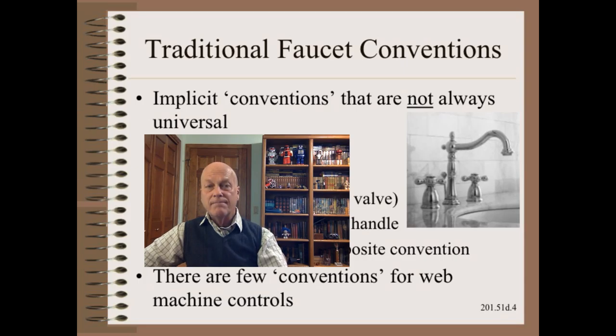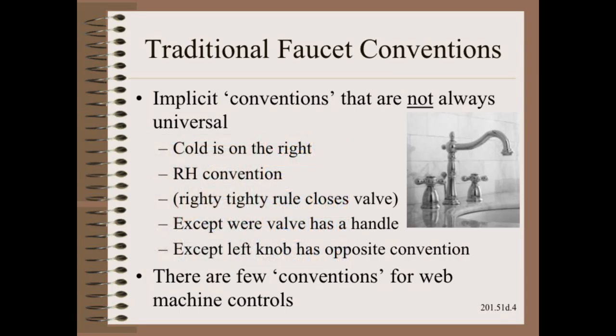Returning to the faucet, let's spell out the conventions we can use with this simple faucet. First is that cold is on the right. This makes some sense, but only if you study operation and see that most humans are right-handed and that most water desires are either cold only or a mix of cold and hot. Two separate studies would be required to understand your customer, the operator, for this one convention on one control.